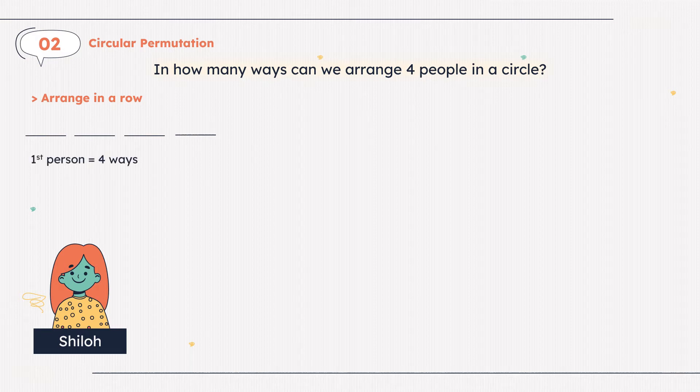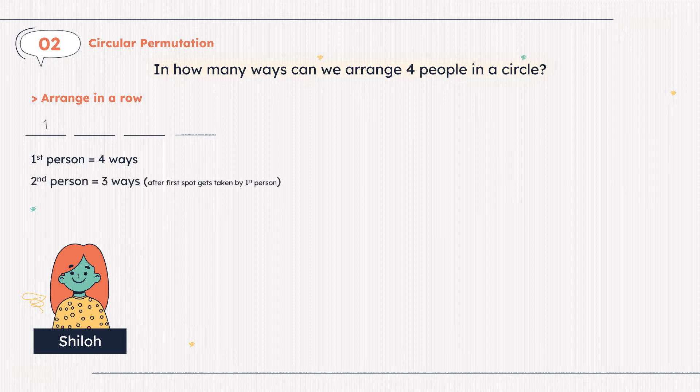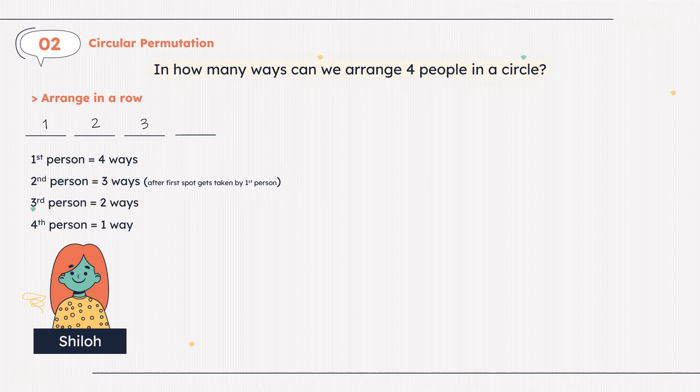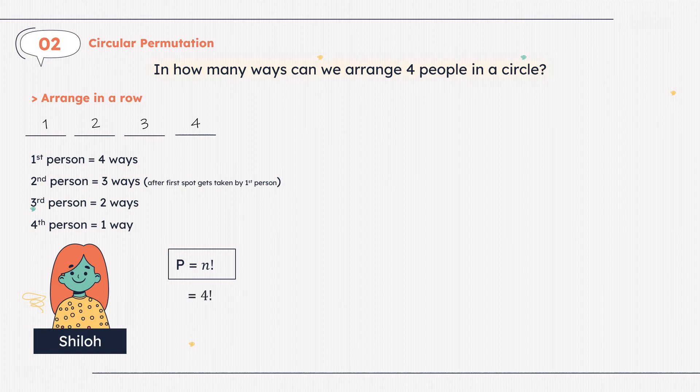The first person has 4 ways, since there are 4 vacant spots. The second person has 3 ways, after the first spot is taken, 3 spots are vacant. The third person has 2 ways, since only 2 spots are vacant. And the same process on the fourth person. The formula for this is p equals n factorial, where n is the total number of objects. 4 factorial is equal to 24. Therefore, we can arrange 4 people in a row in 24 ways.